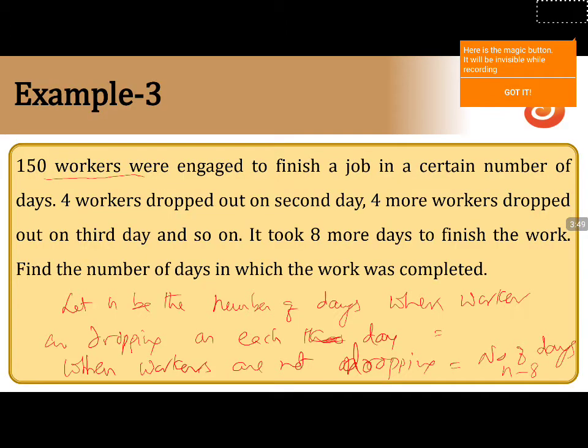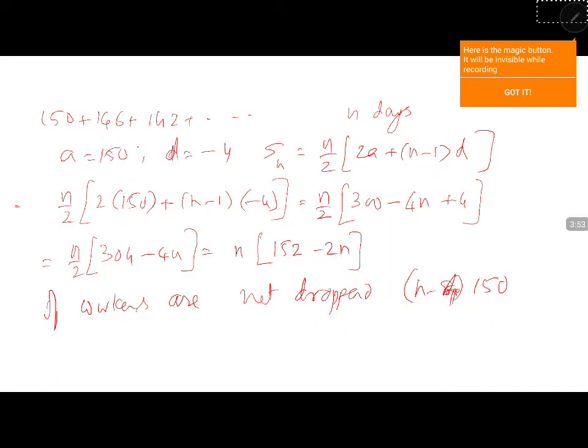When you took n minus 8, so it is n minus 8 multiplied by 150. Now you equate these two values.